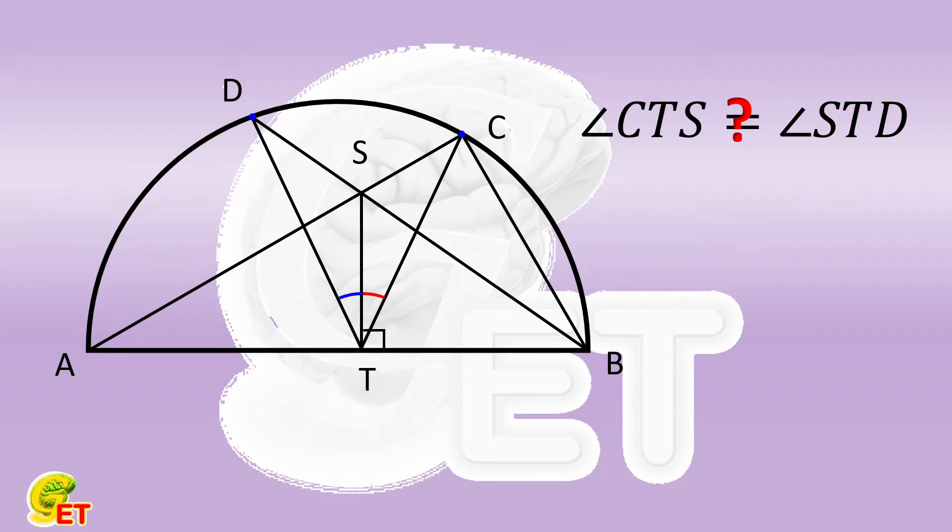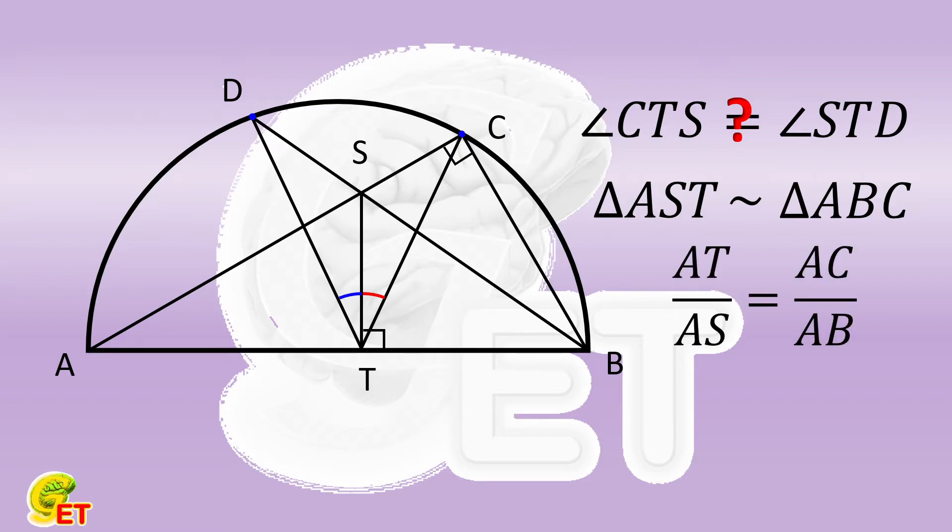Since AB is the diameter, BC is perpendicular to AC. Then two right triangles, AST and ABC with common acute angle must be similar to each other. The ratio between the corresponding sides, AT to AS, is equal to that of AC to AB.